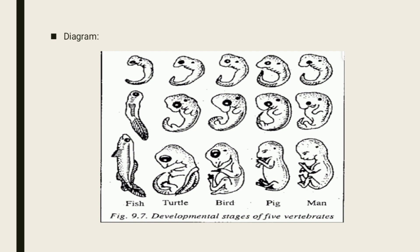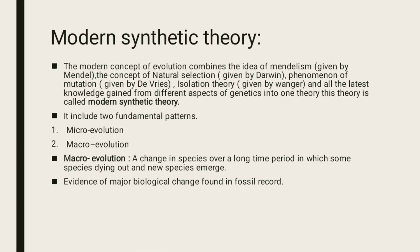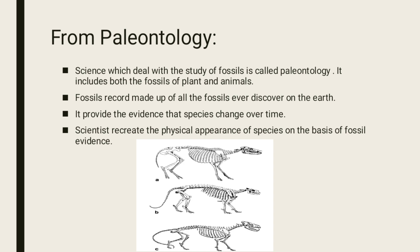From paleontology — the science that deals with the study of fossils — is called paleontology. It includes both fossils of plants and animals. The fossil record, made up of all the fossils ever discovered on Earth, provides evidence that species change over time. Scientists recreate the physical appearance of species on the basis of fossil evidence.